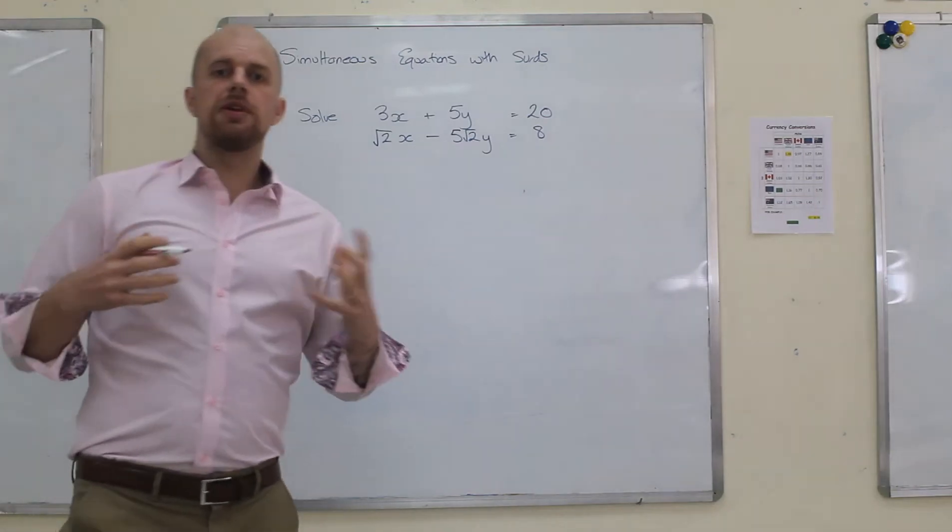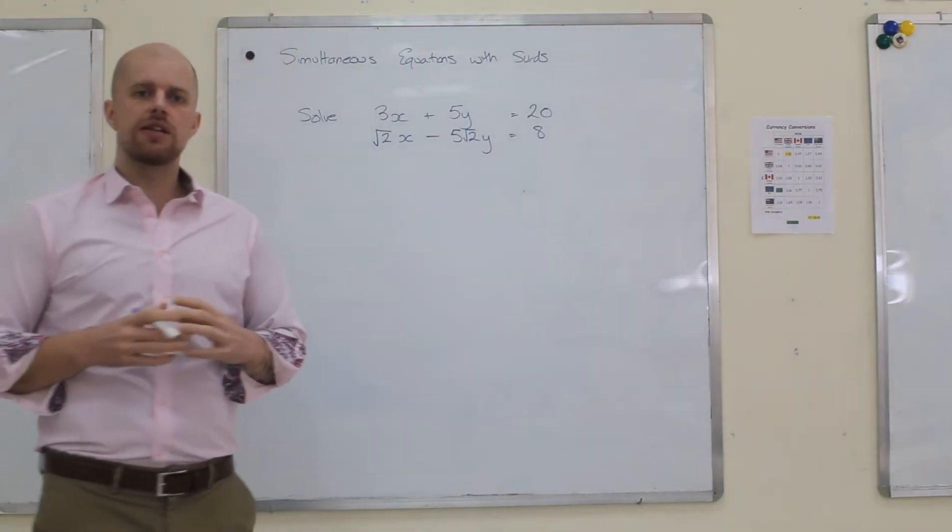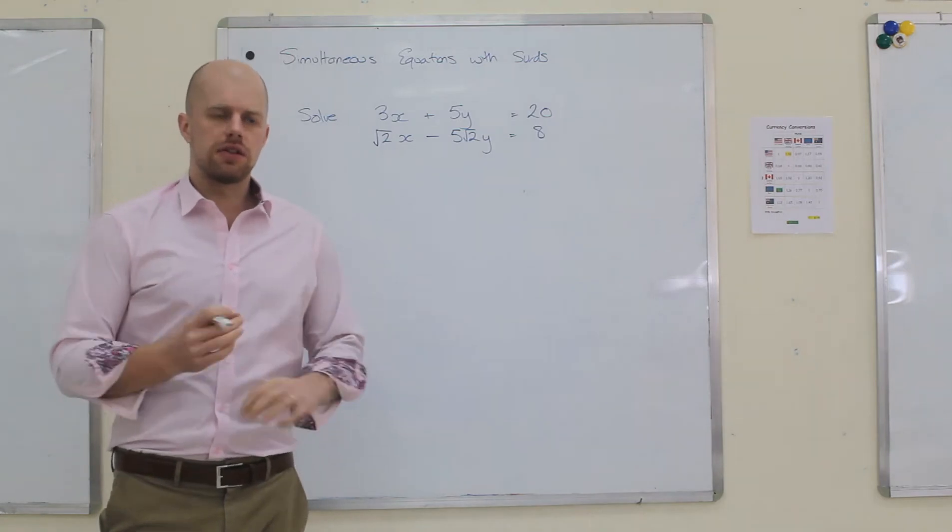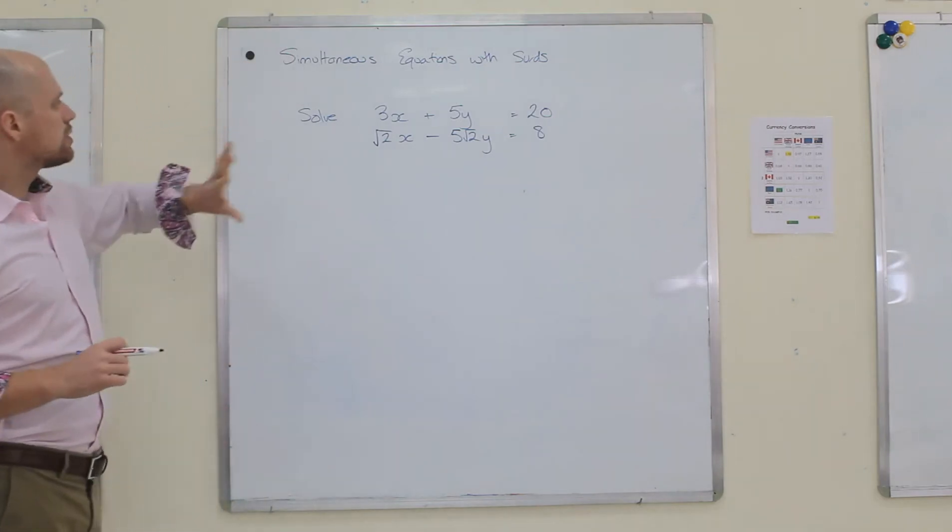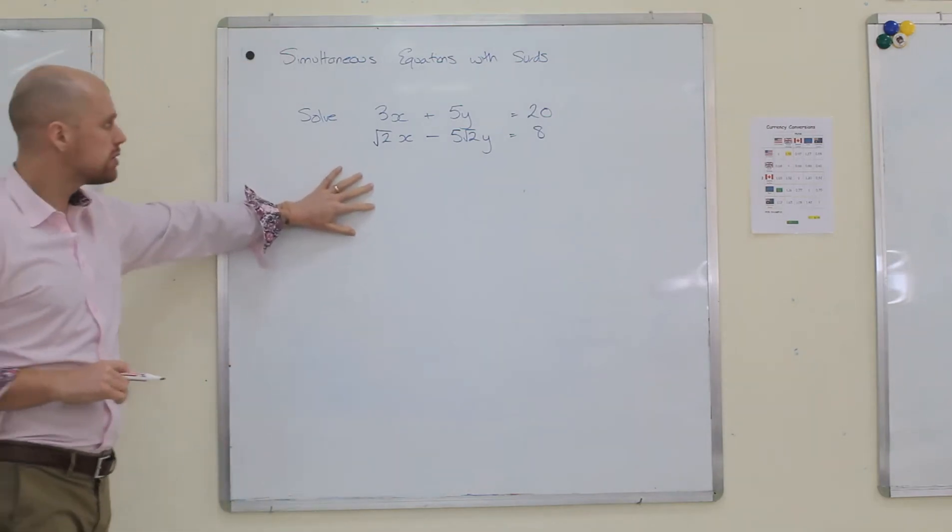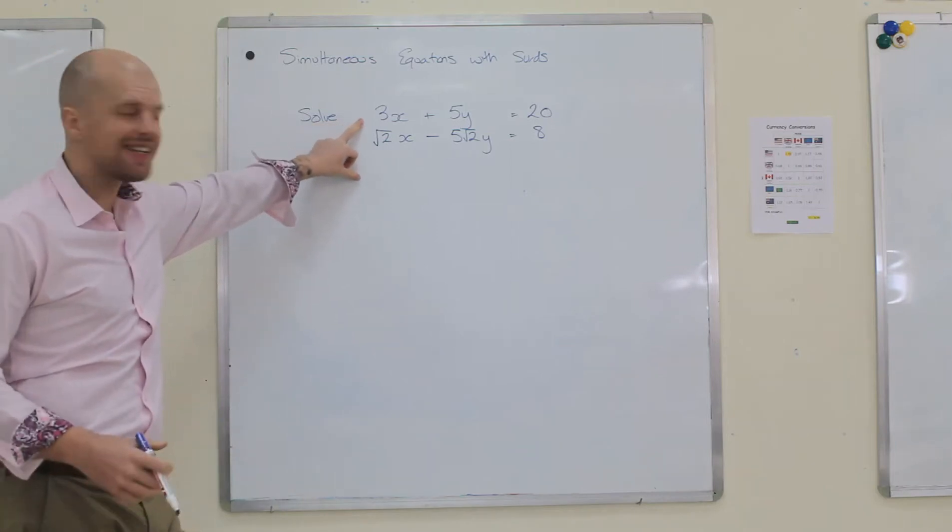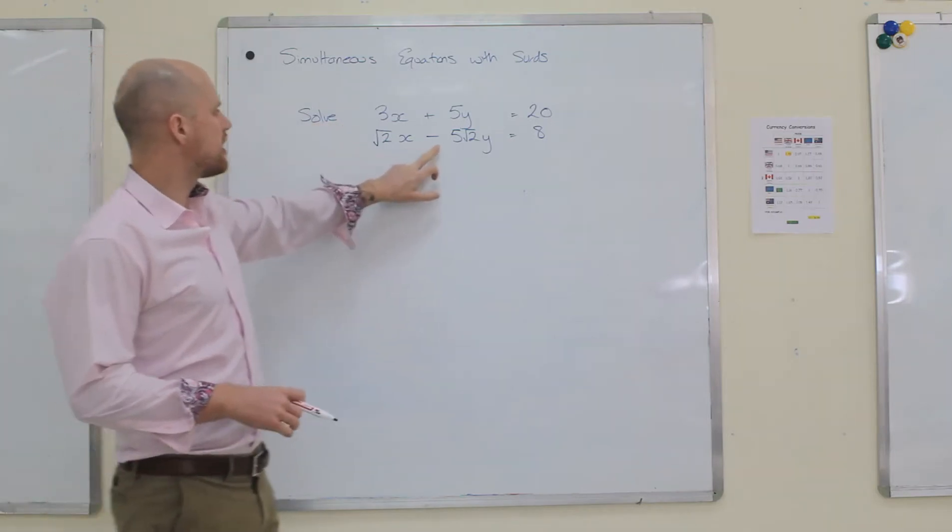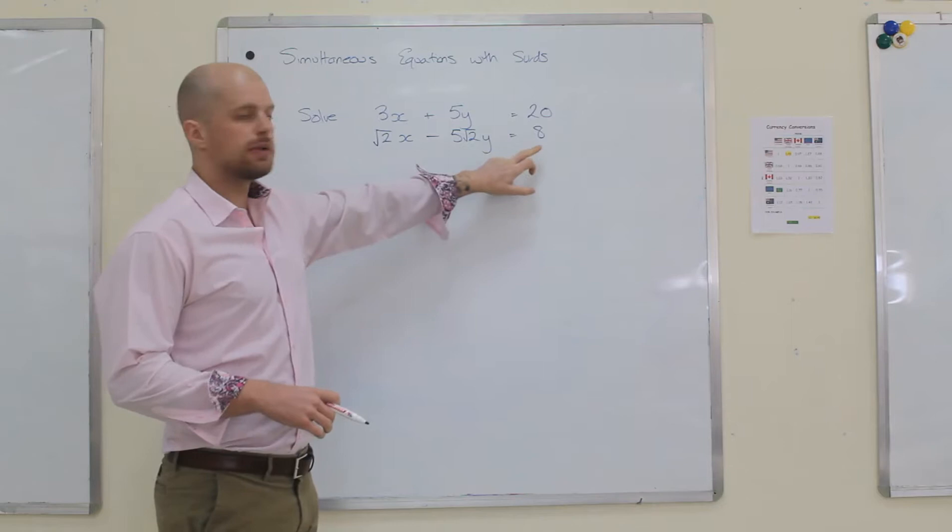In this video, we are going to be looking at how to solve simultaneous equations which involve surds. I've got simultaneous equations on the board: 3x plus 5y is 20, and root 2x minus 5 root 2y equals 8.